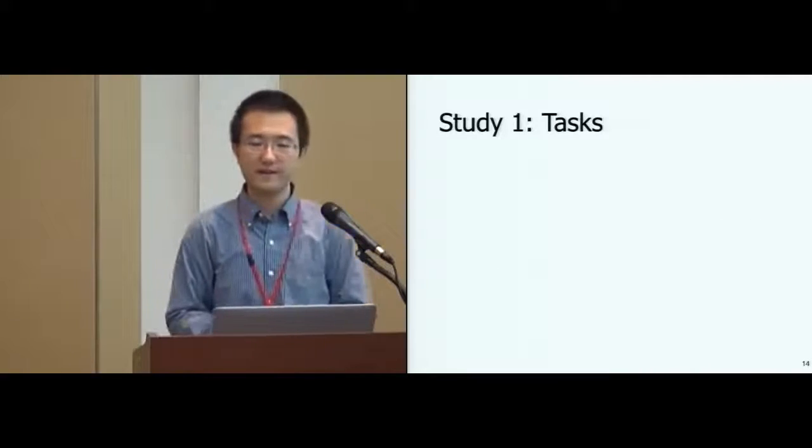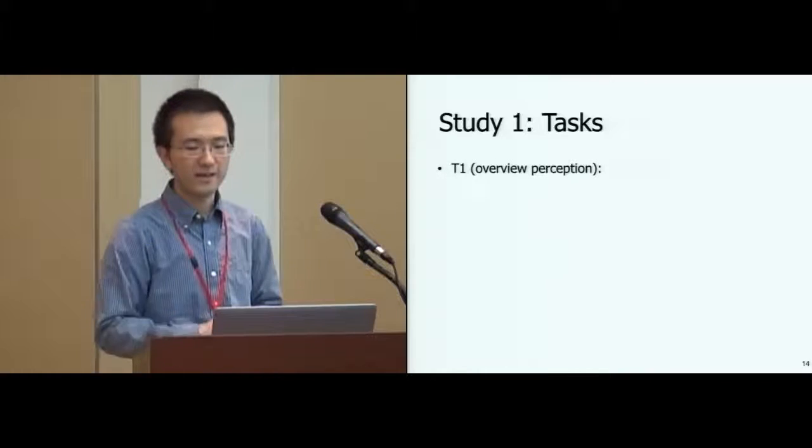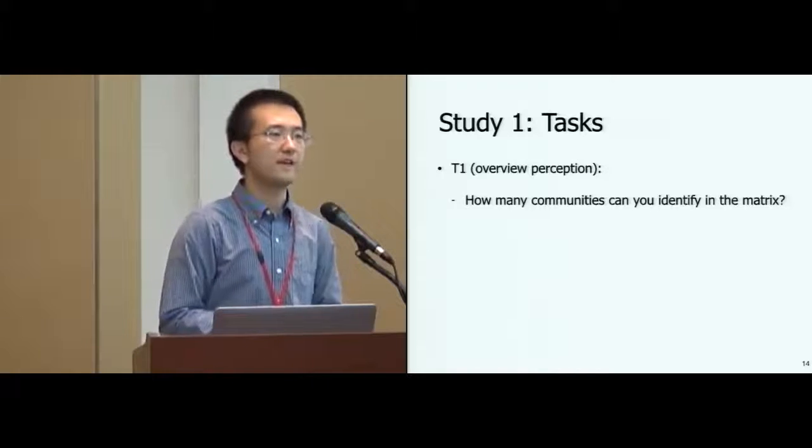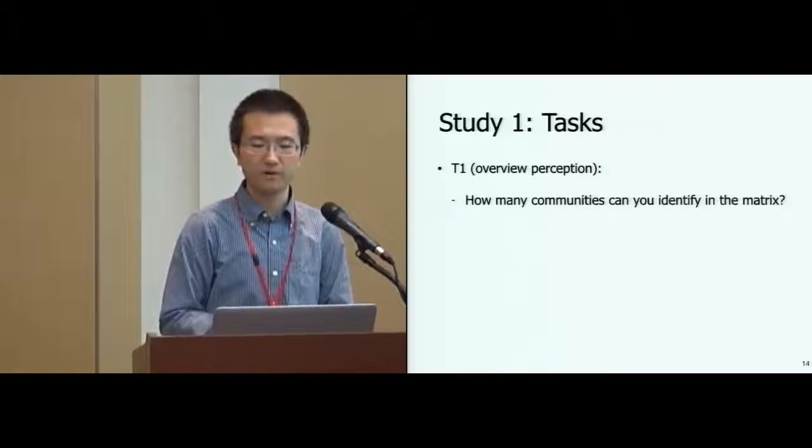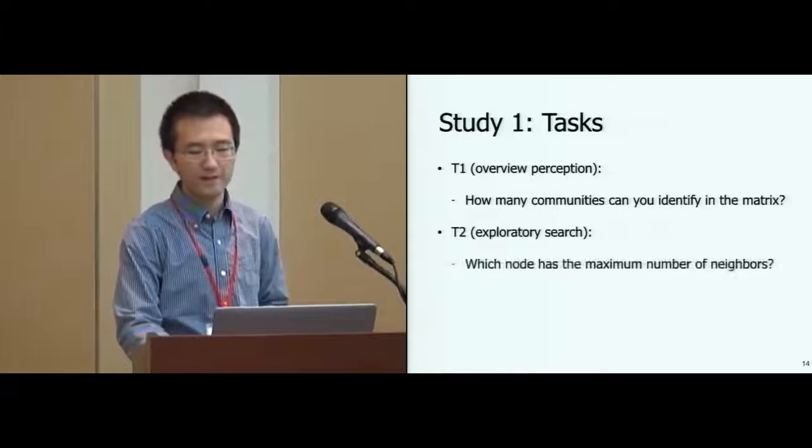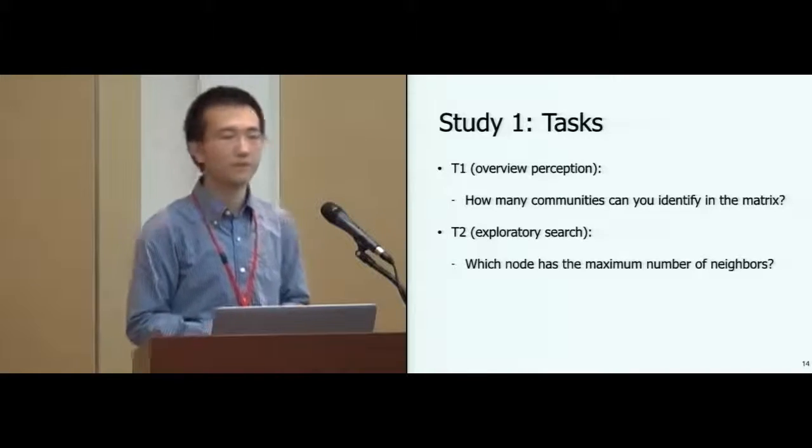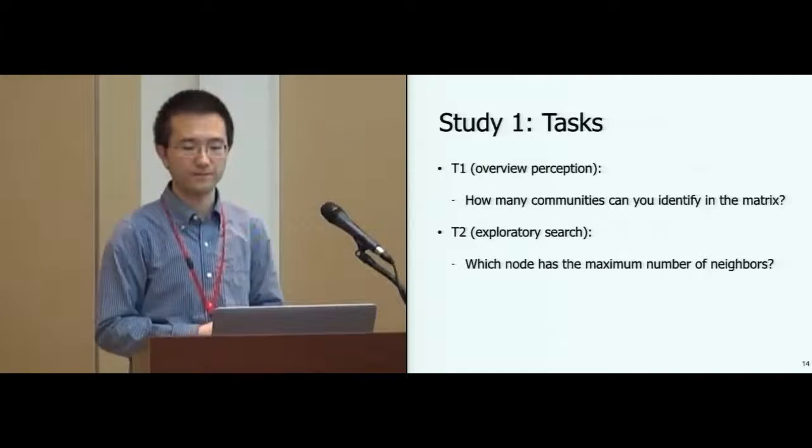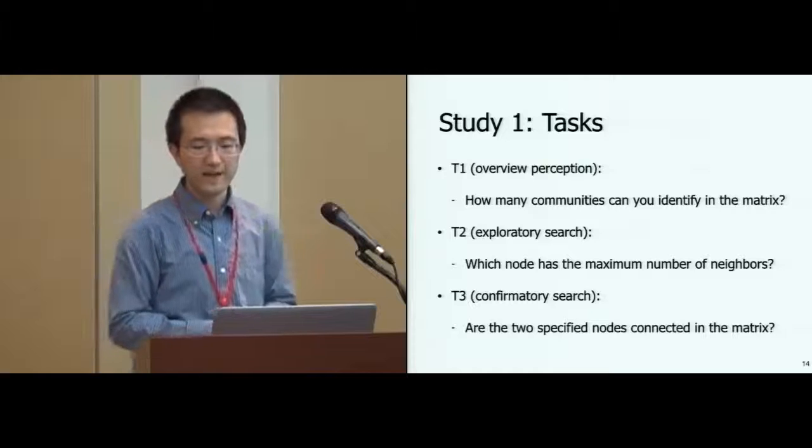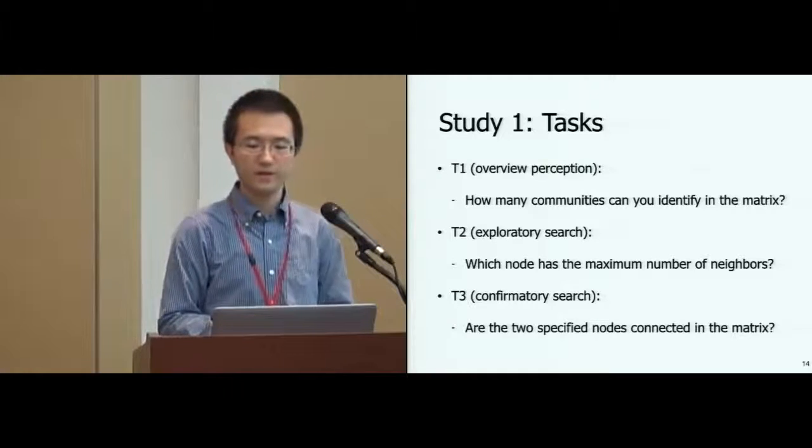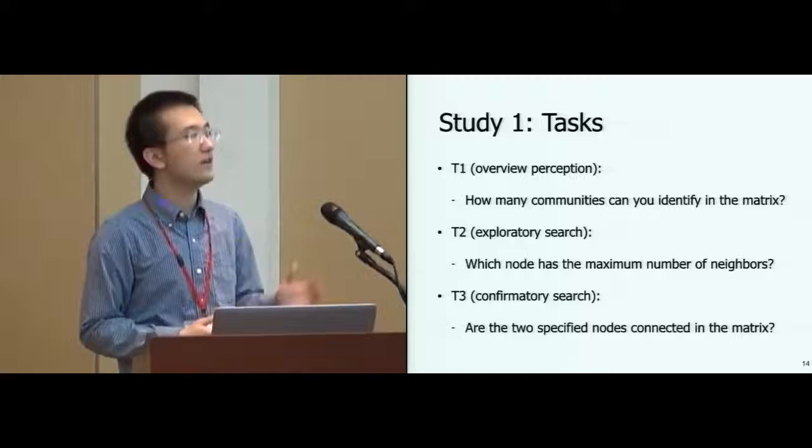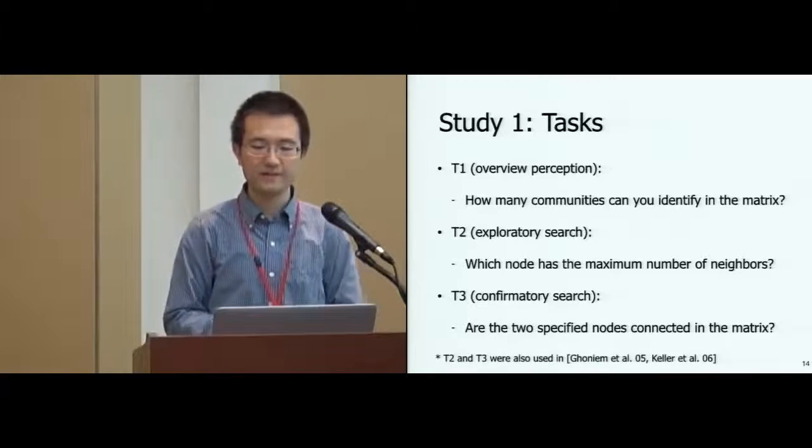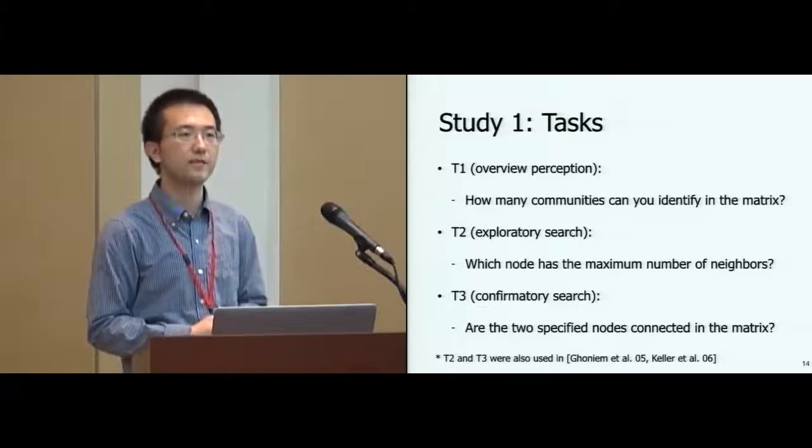The study focused on graphical perception tasks. Task one asked users to find the number of communities in the network, which represents an overview case of network visualization. Task two asked users to find the most connecting node, which requires browsing through the representation to find information. Task three asked users to make judgments once they locate the specified targets: Are the two specified nodes connected in the network? Tasks two and three were also used in previous studies.